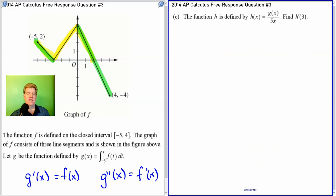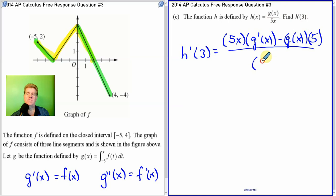Question c. They've defined a new function for us, h. We want to find h'(3). So let's find the derivative. Well we got a quotient rule. That's all we got. So we got the bottom times the derivative of the top. And what's the derivative of g(x)? Well it's g'(x). Minus the top times the derivative of the bottom, which would just be 5. All over the bottom squared. All right. That's our derivative.